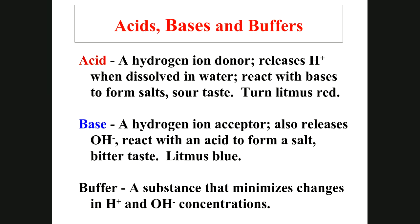An acid is a hydrogen ion donor — a molecule that when dissolved in water donates hydrogen ions. HCl (hydrogen chloride) dissolved in water is an example. Acids react with bases to form salts, taste sour (like vinegar, which is acetic acid), and turn litmus red. A base is a hydrogen ion acceptor that also releases hydroxyl ions; it reacts with an acid to form a salt and turns litmus blue.